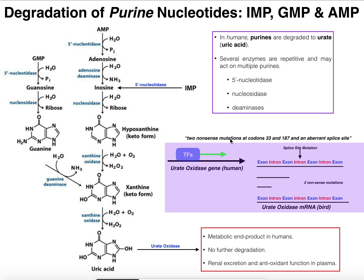There are actually two nonsense mutations in the urate oxidase gene in humans. A nonsense mutation is a mutation where the resulting codon encodes a stop codon instead of a normal amino acid. These are at codons 33 and 187, so any resulting protein would be much shorter — a truncated protein that is probably non-functional. Additionally, there is a splice site mutation which prevents proper splicing of the mRNA, meaning introns cannot be correctly removed and the mRNA is translationally inactive.